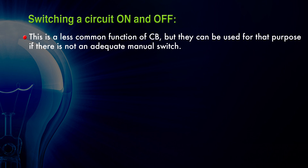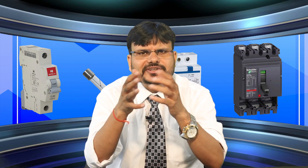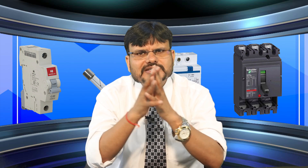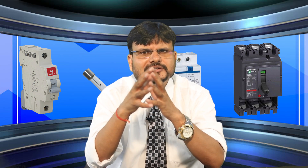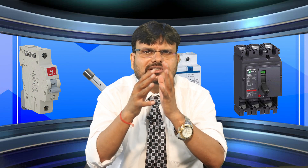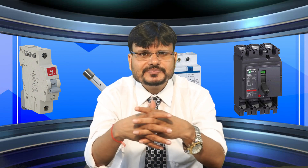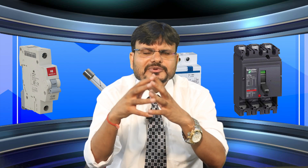In today's session we discussed components of LT switchgear, different types of fuses, miniature circuit breaker (MCB), earth leakage circuit breaker including current operated ELCB and voltage operated ELCB, and molded case circuit breaker (MCCB). In the next session we will discuss types of batteries and their important characteristics, electrical shock, and the importance of earthing and how earthing can be done.